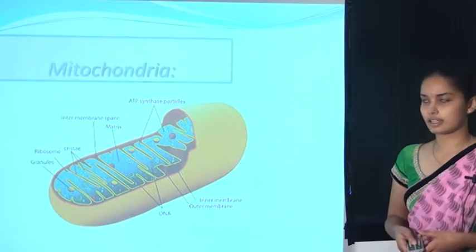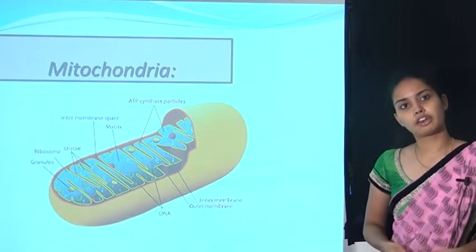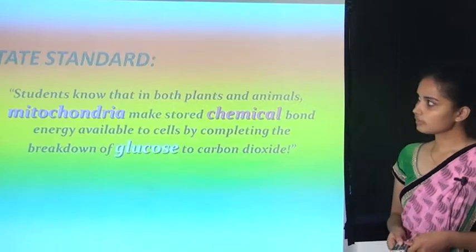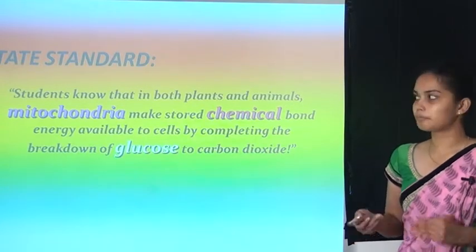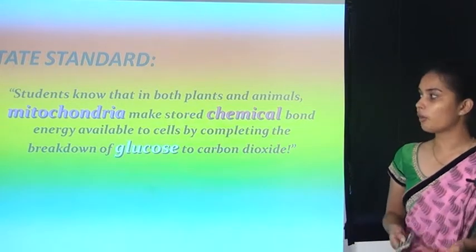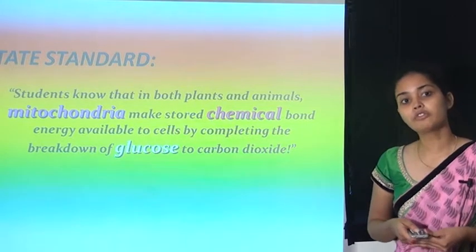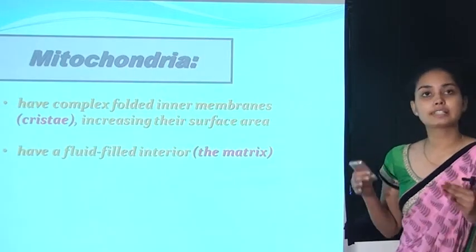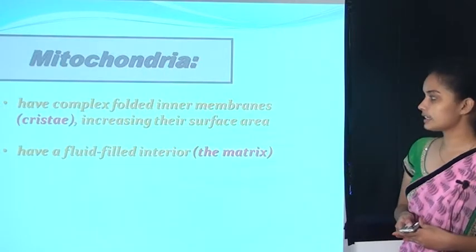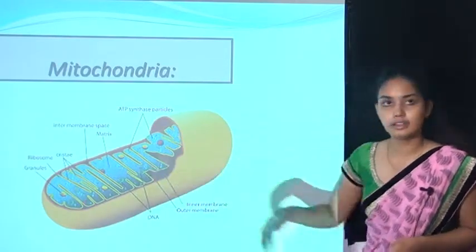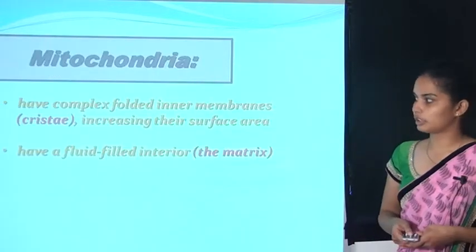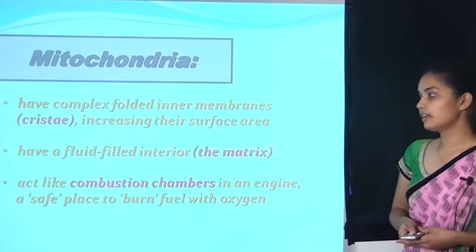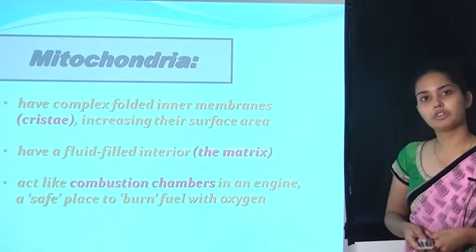What is mitochondria? Mitochondria is known as the powerhouse of the cell. Both in plants and animals, mitochondria make chemical bond energy available to cells by complementing the breakdown of glucose to carbon dioxide (CO2). They have a complex infolded inner membrane known as the cristae, which increases surface area. They have a fluid-filled interior called the matrix, and they act like a combustion chamber — a safe place to burn fuel with oxygen.